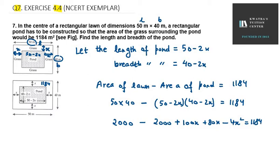So 2000 and 2000 gets cancelled out. We are left with 0 here and we will bring these left-hand side terms to the right-hand side. So we will get 4x square minus 180x.